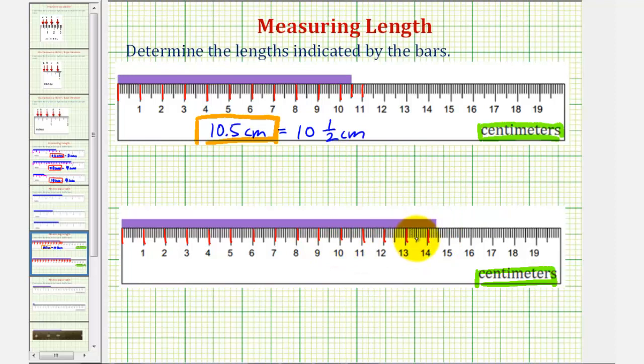So let's count the number of tick marks. It might be hard to see on the screen, but we have one-tenth, two-tenths, three-tenths, four-tenths of a centimeter longer than fourteen centimeters. So we have fourteen and four-tenths centimeters, which we can write using decimal notation as fourteen point four centimeters.